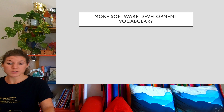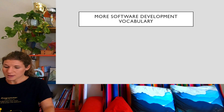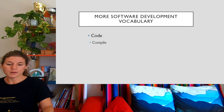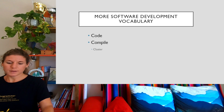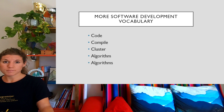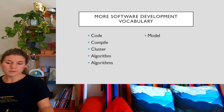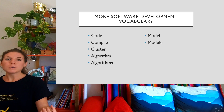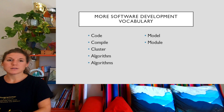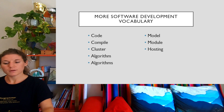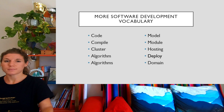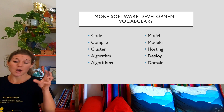Now we'll move on to more software development vocabulary, because there are so many important words. 'Code.' 'Compile.' Compile. 'Cluster.' 'Algorithm.' Algorithm. Algorithms — in plural. 'Model.' Not to be confused with 'module.' Module. You could have different modules and different models. 'Hosting.' And 'deploy.' And 'domain.' So if you have a website, for example, you would need hosting and a domain.